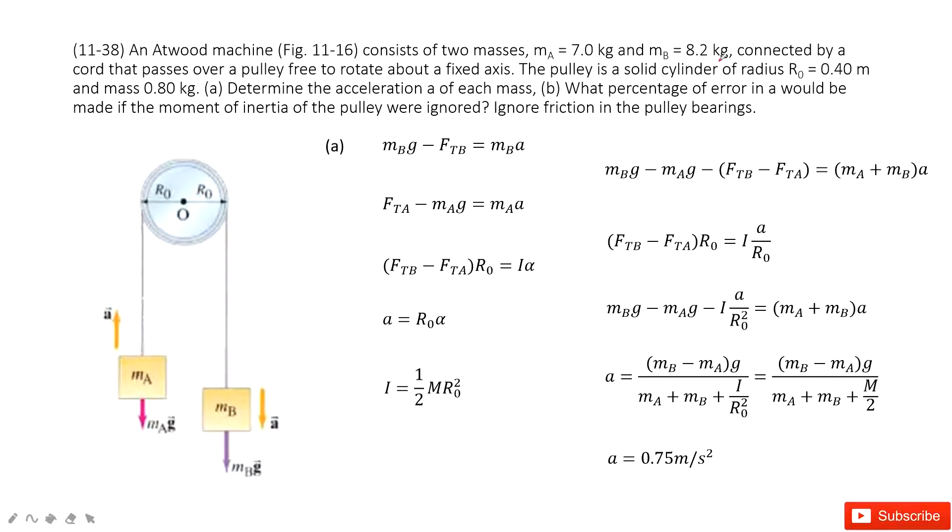You can see the mass of A and B is given, and also the radius for this pulley is given, and the mass for the pulley is given. The most important one tells us the pulley is a solid cylinder. This will help us to find the moment of inertia for this pulley.